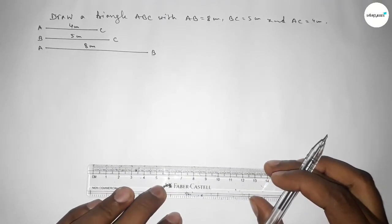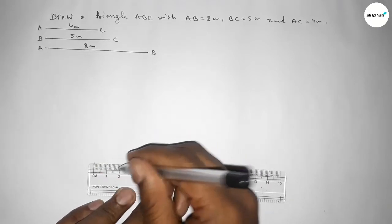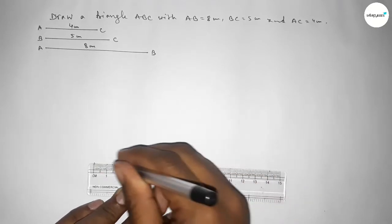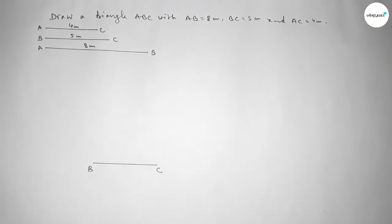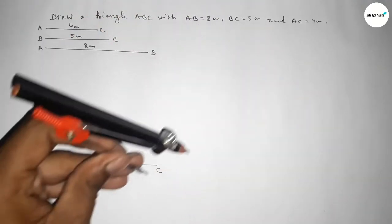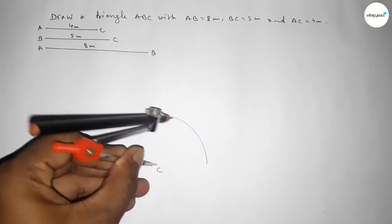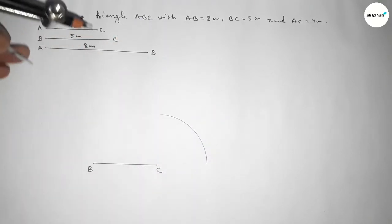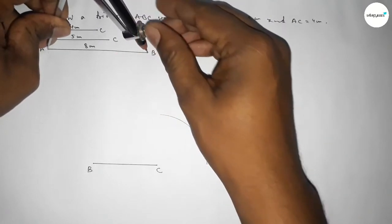Now first we draw a line of length 5 centimeter, taking point B here and point C here. Next, taking the length AC equal to 4 centimeter using a compass, putting the compass on point C, and drawing an arc on the side.